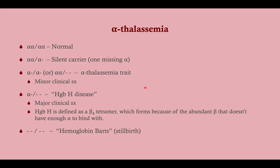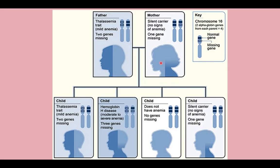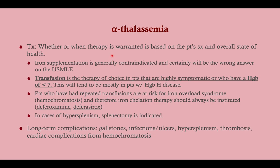Be aware of the variety of alpha-thalassemia types for Step 1. Treatment is generally typical for anemia; however, iron supplementation is off the table for any thalassemia. This is not iron deficiency — it's due to an inability to make globin, so the iron is fine. We do transfuse these patients if they are highly symptomatic because transfusion gives them normal red blood cells.